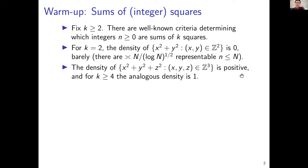Gauss, or perhaps Legendre, determined which integers are sums of three squares. That density is positive, and once you go to four or more squares, then every integer is represented. So in particular, the density of represented sums of four or more squares is one.